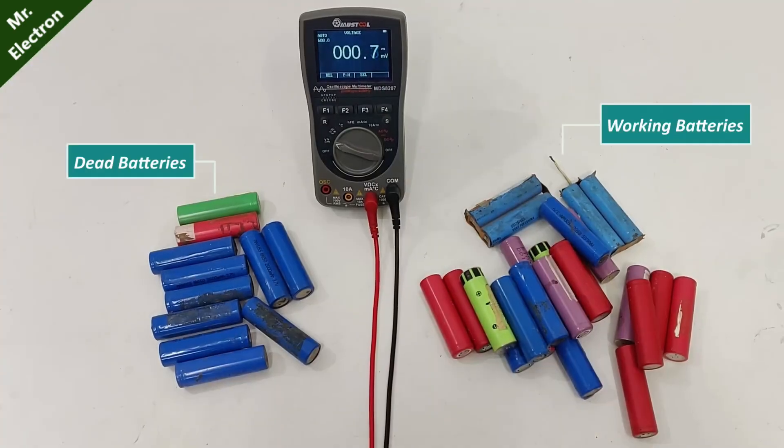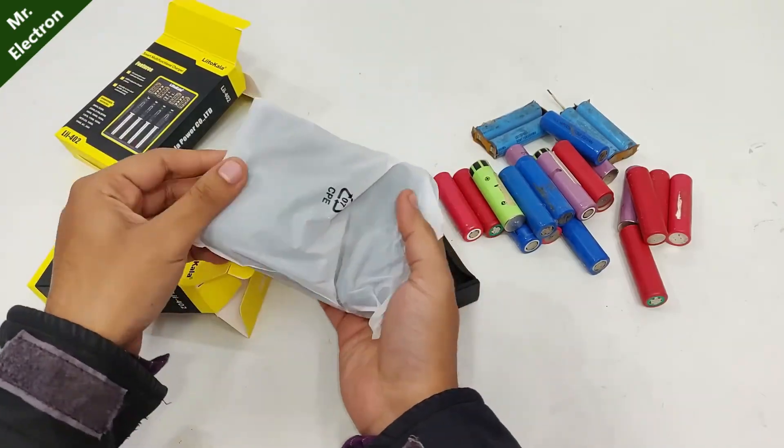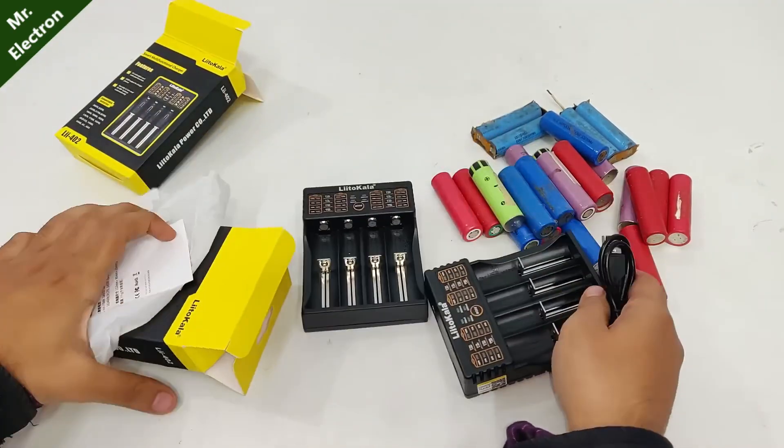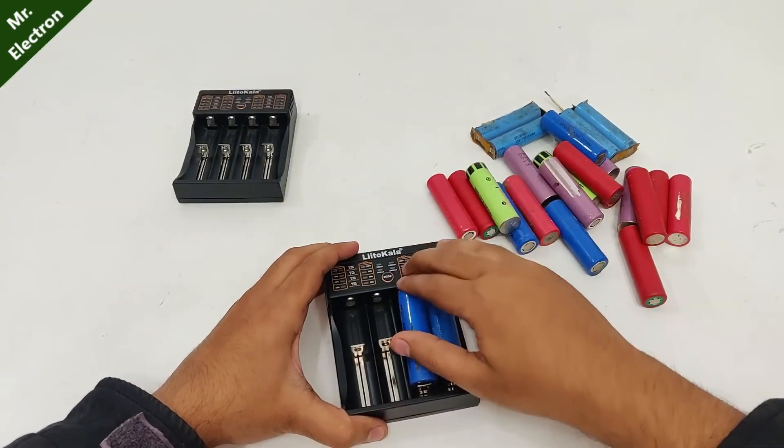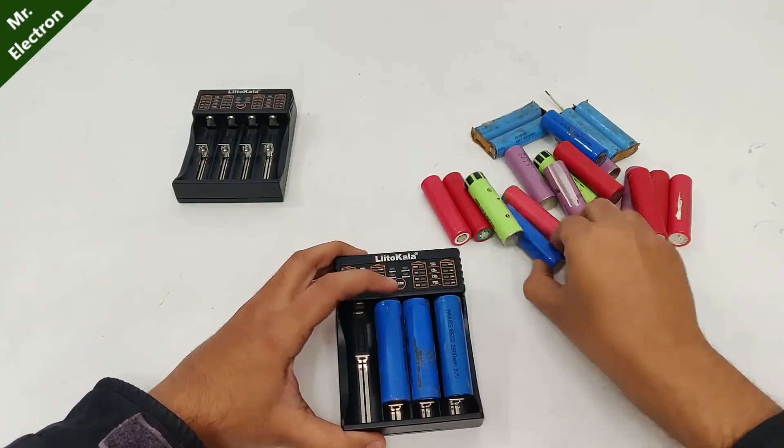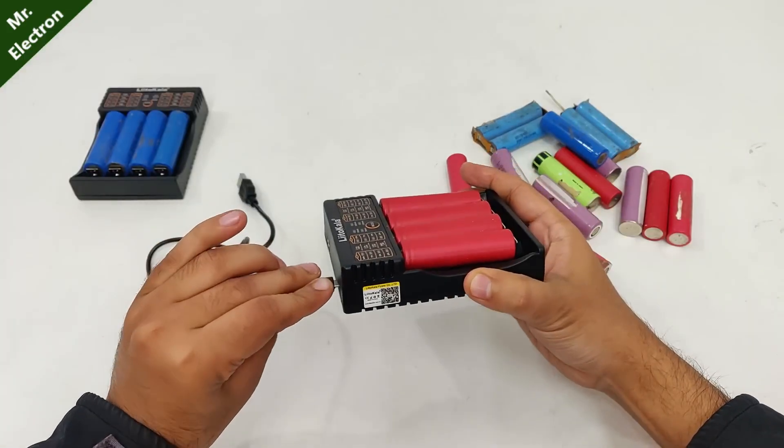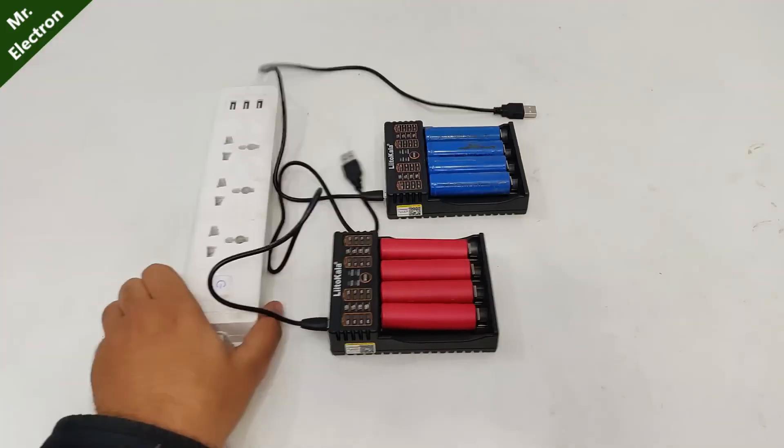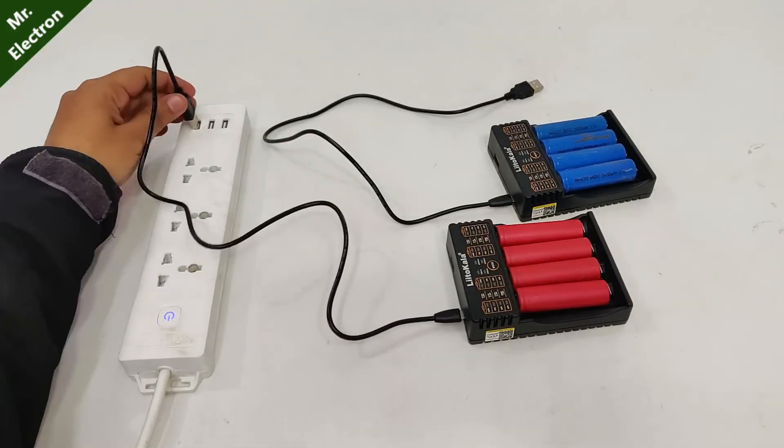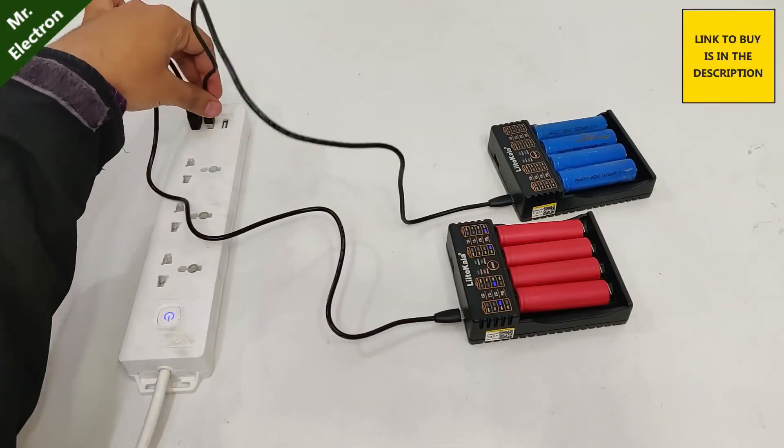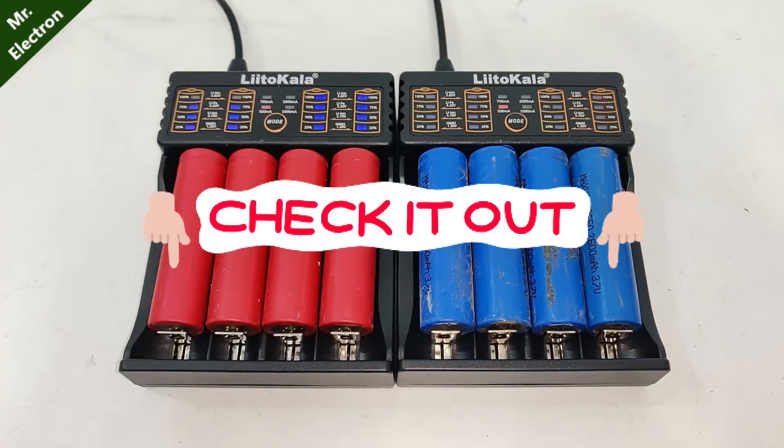After separation process I will use my universal cell chargers to recharge my discharged batteries. Now this charger is compatible with your AA, AAA, LiFePO4, 18650 batteries, plus you can also use it as a power bank. Link for this product has been provided in the description.